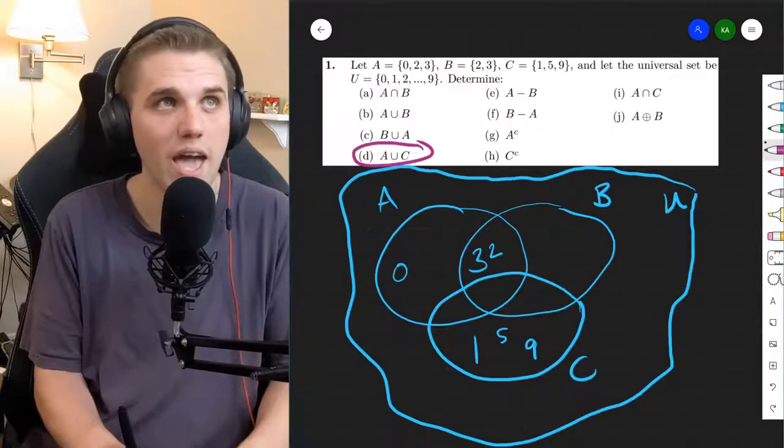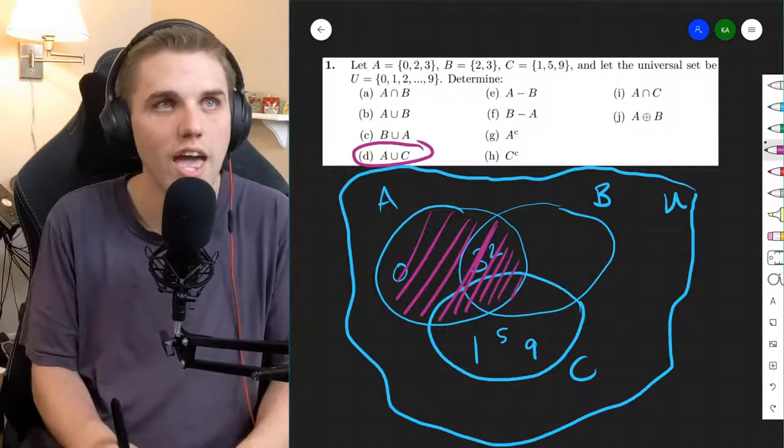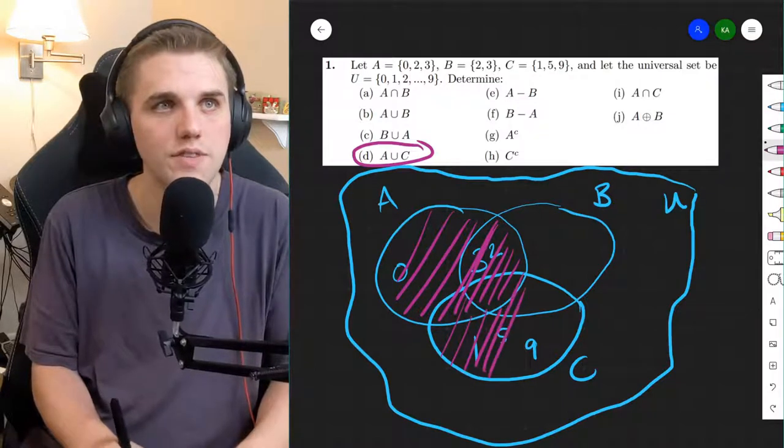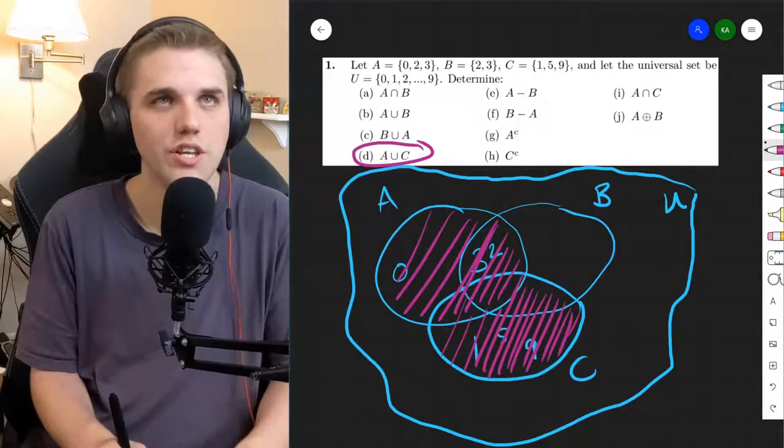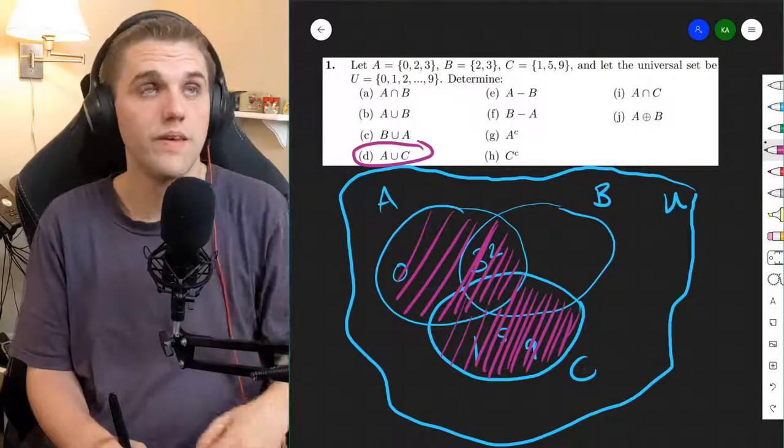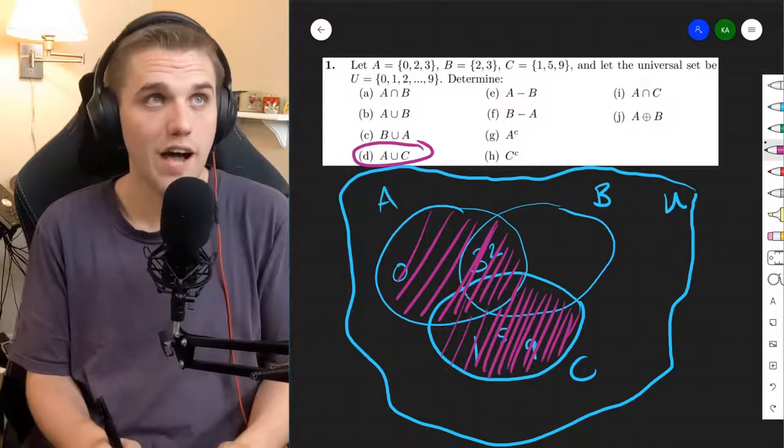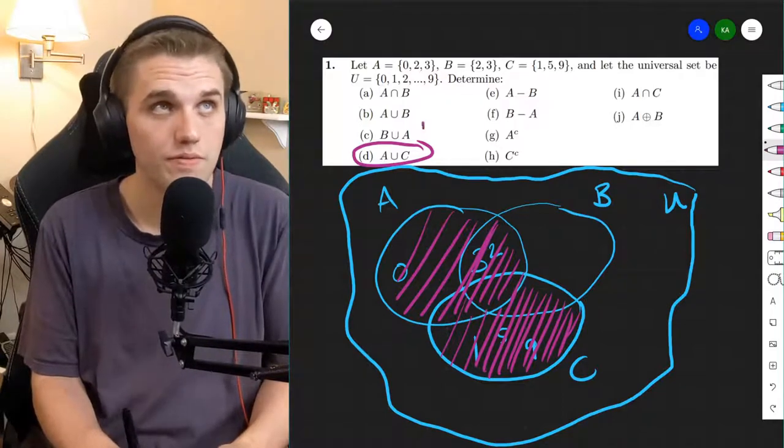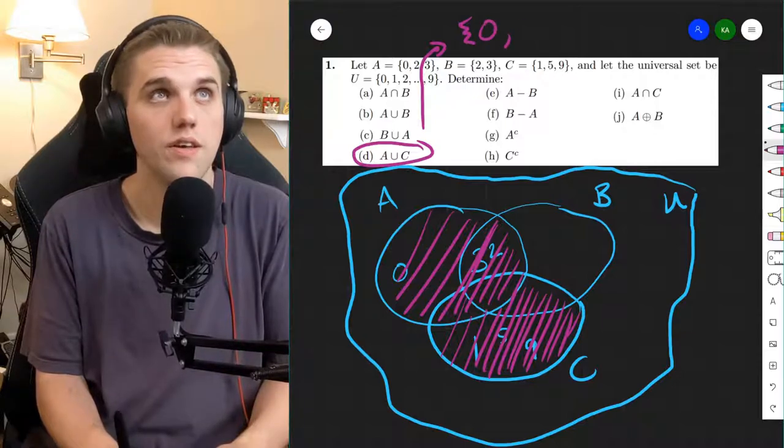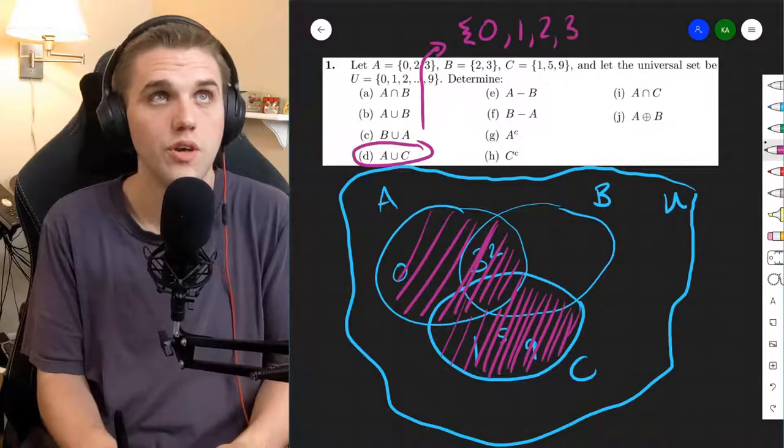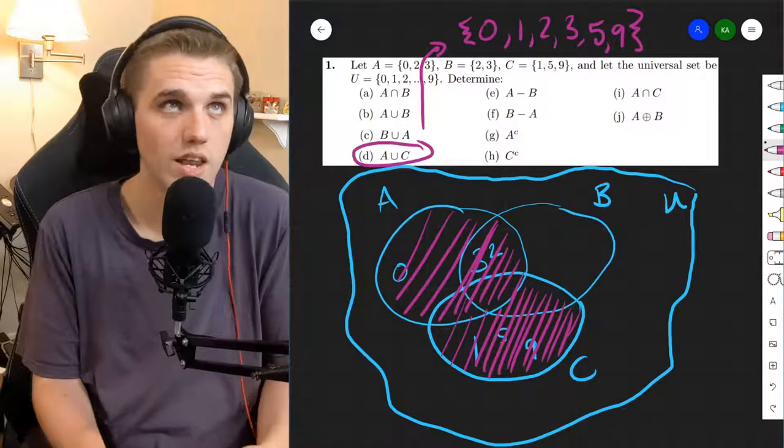All right, next up, A union C. So it's all of A and then the rest of C that I didn't draw in. Okay, so what is in this region? Well, I see 0, 2, 3, 1, 5, and 9. So the set containing those elements: 0, 1, 2, 3, 5, and 9. And no, it doesn't need to be ordered. You can write this in any order you want.